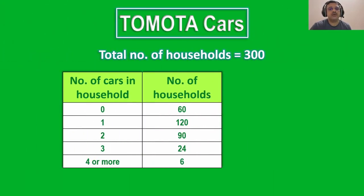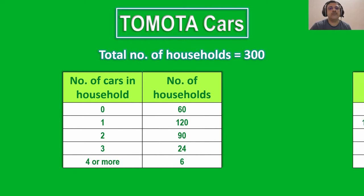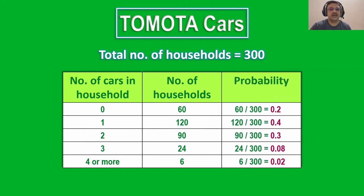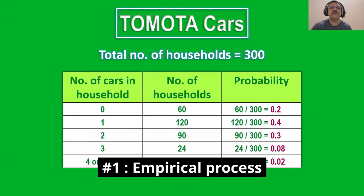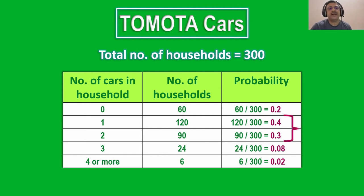We have the car ownership in the leftmost column followed by the number of households owning the cars. We can calculate the probability distribution for each car-owning household by dividing the relative frequency of the household by the total number of households surveyed, that is 300. Here, we have used the empirical process to calculate the probability distribution. From this table, we understand that there are 70% of people in the region who own two or less cars.